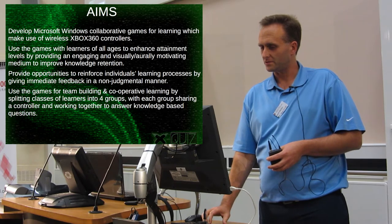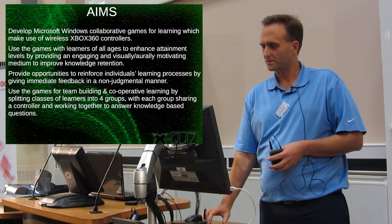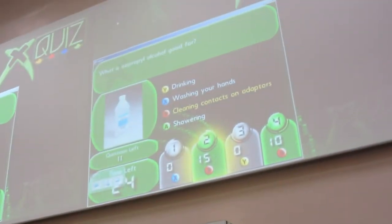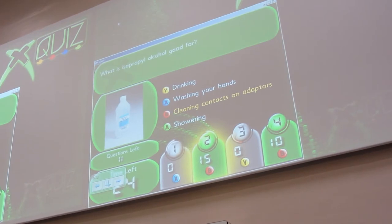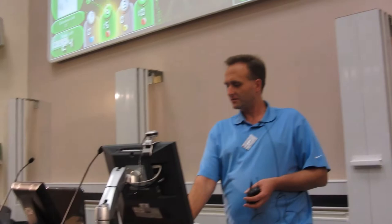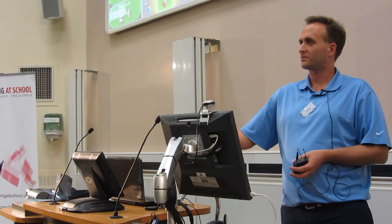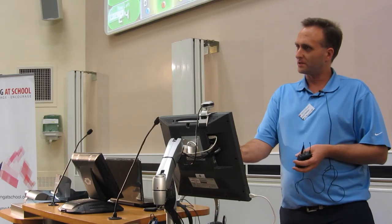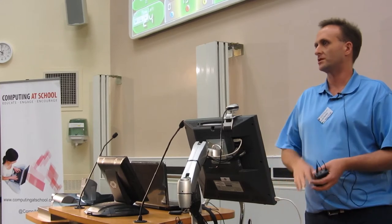I'll show you what the actual games look like since we're short for time. So that's one of the games — that's a lovely question — and all they do is hit the button on the answer. You can see there that team 3 thought it was for drinking. Teams 2 and 4 got it right, and it does have the fastest finger element so whoever hits the button quickest gets a bonus five points. You can also put pictures in so you can do that for any subject.